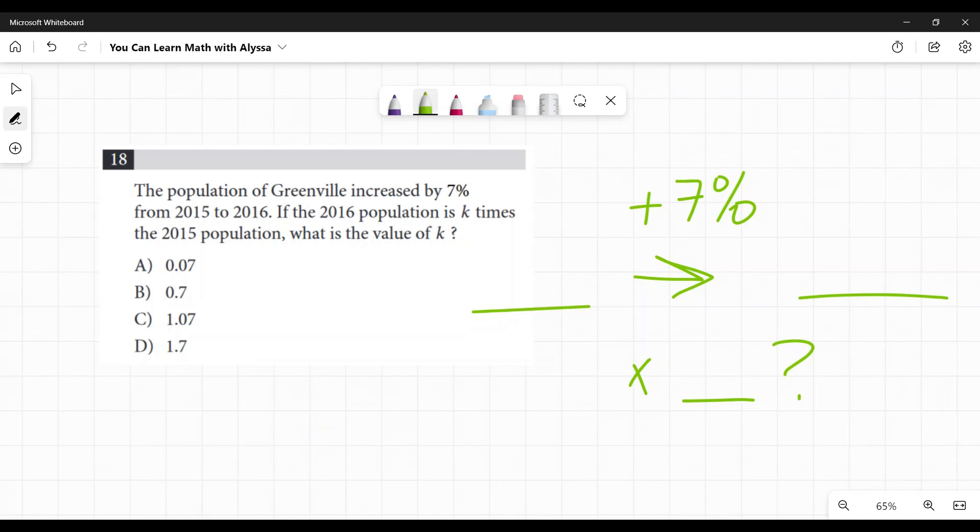So to increase something by 7%, look at our answers here. So this represents 7%. This represents 70%. This represents 107%. And this represents 170%.